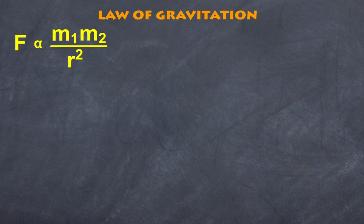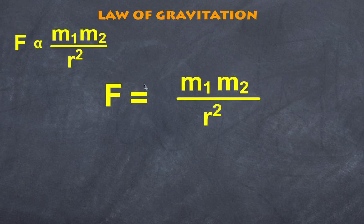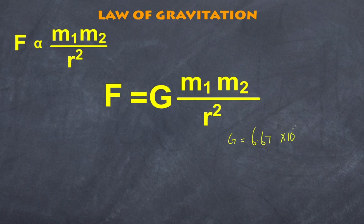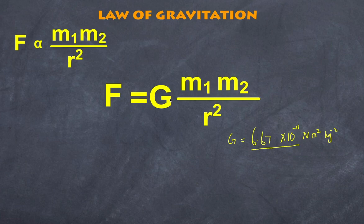So what is the law of gravitation? If F is proportional to m1 m2 over r squared, then if I divide those two I get a constant. If I want to make this relationship an equation, all I need is a constant value, and that constant value is G — the gravitational constant — which has a value of 6.67 × 10⁻¹¹, with units of newton meters squared per kilogram squared. You can see that the gravitational constant is really small, so the gravitational force between two objects is going to be reasonably insignificant for small masses.